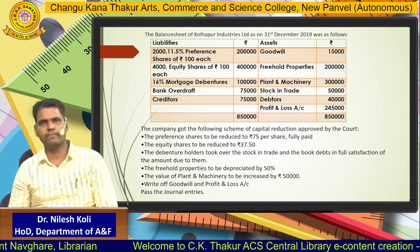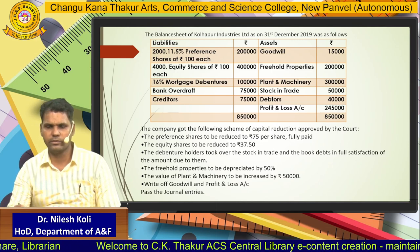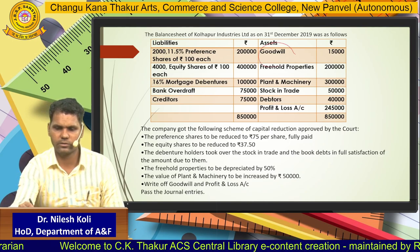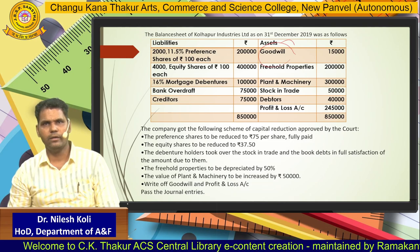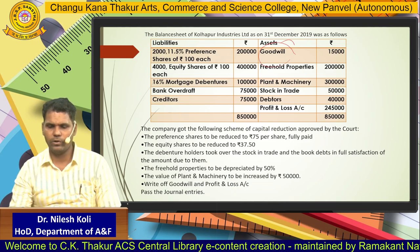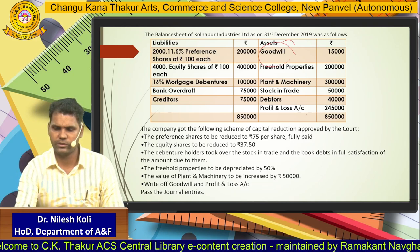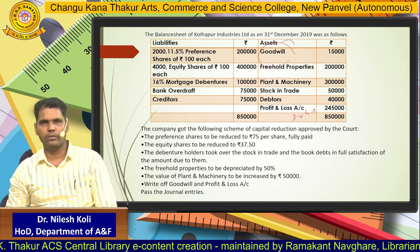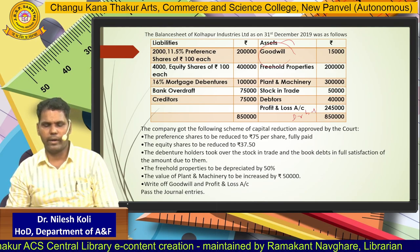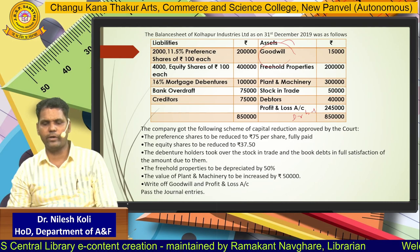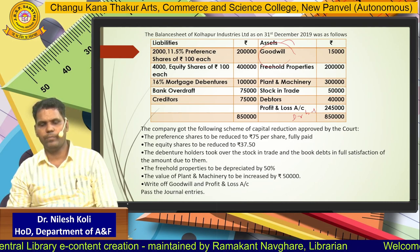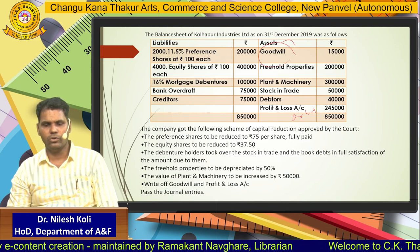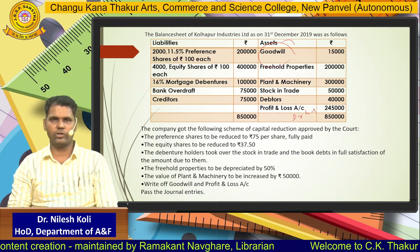In this balance sheet, goodwill is there which is an intangible asset, and the profit & loss account is there which is in a debit balance, meaning it is a loss. So we have to write off the P&L account debit balance (loss) and goodwill through the capital reduction account.